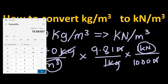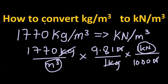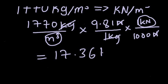Let's use a calculator. We have 1770 times 9.81, which is 17363, divided by 1000. The answer is 17.363, so our answer is approximately 17.363 kilonewtons per cubic meters.